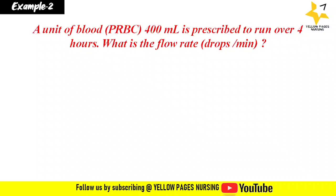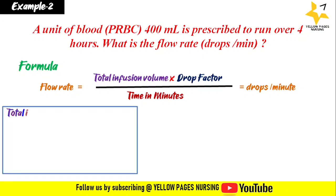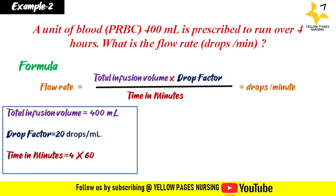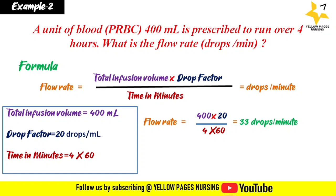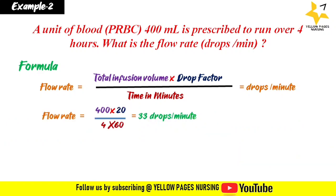Example 2: A unit of blood PRBC 400 ml is prescribed to run over four hours. What is the flow rate in drops per minute? Using the same formula — total infusion volume × drop factor ÷ time in minutes — with 400 ml, a drop factor of 20 drops per ml, and time of 4 × 60 minutes, we get 33 drops per minute. For ml per hour: 400 ÷ 4 = 100 ml per hour.